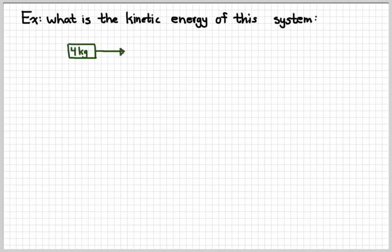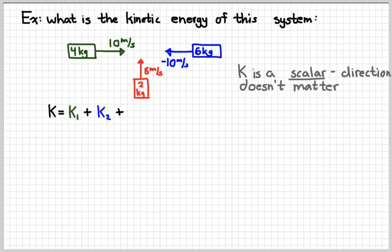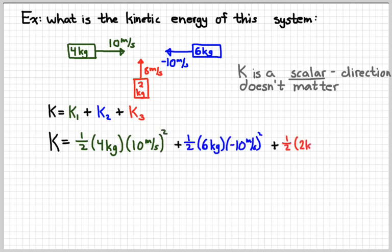So let's look at an example. Suppose we have a system of objects made up of three objects that are all moving in different directions. We want to know what is the kinetic energy of the system. Again, remember that kinetic energy is a scalar. The direction doesn't matter to us. And so to find the kinetic energy of the system, I'm just going to add up the individual kinetic energies. So add up the individual quantities one-half mv squared. So just kind of writing that all out like this.